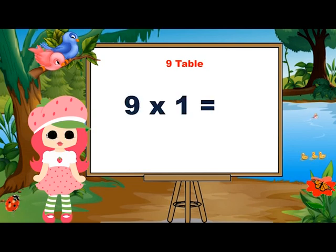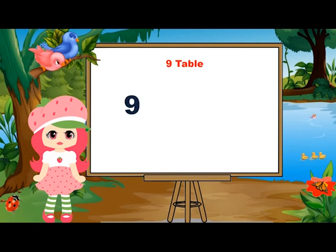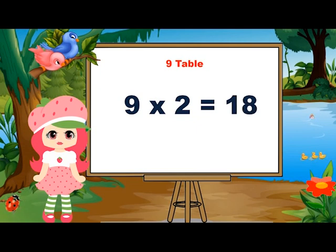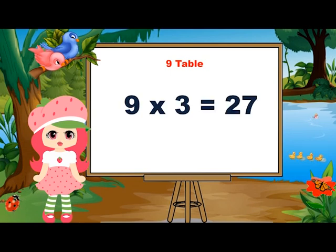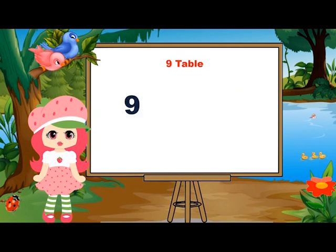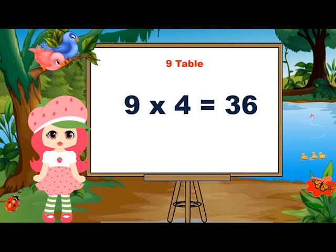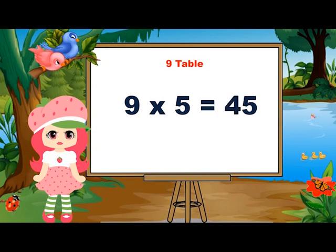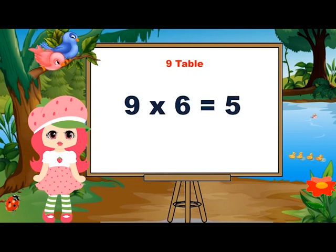9 ones are 9. 9 ones are 9. 9 twos are 18. 9 twos are 18. 9 threes are 27. 9 threes are 27. 9 fours are 36. 9 fours are 36. 9 fives are 45. 9 fives are 45. 9 sixes are 54. 9 sixes are 54.